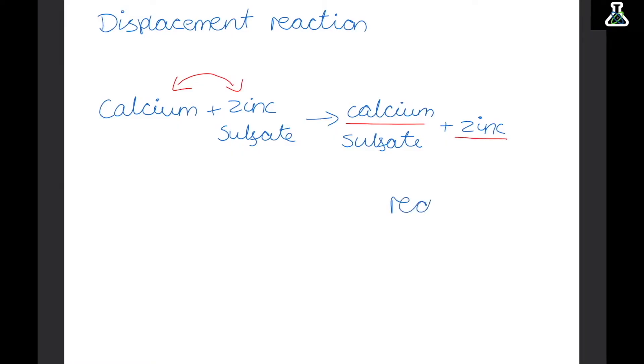Now this is a redox reaction and this is because we have oxidation and reduction happening at the same time. So calcium is oxidised as it loses two electrons to become a calcium ion to be part of the calcium sulphate compound. And zinc is reduced as it has gained some electrons to become normal zinc atoms again.